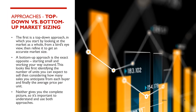There are two approaches to market sizing: top-down and bottom-up. The top-down approach starts by looking at the market as a whole, from a bird's eye view, then refines it to get an accurate market size. A bottom-up approach is the exact opposite, starting small and working your way outward.